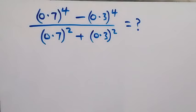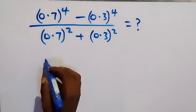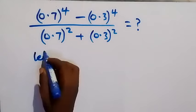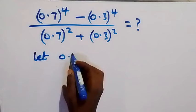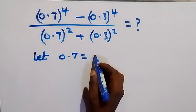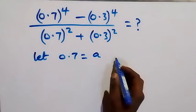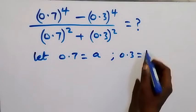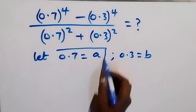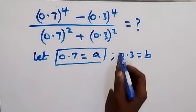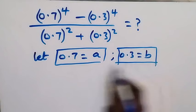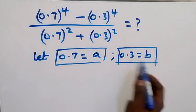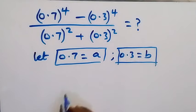From here, to make our work easier, let's represent 0.7 as letter a, and let 0.3 be equal to letter b. So from here we just substitute: instead of 0.7 we substitute a, and instead of 0.3 we substitute b.